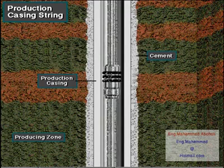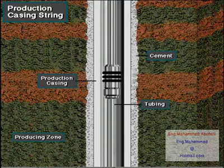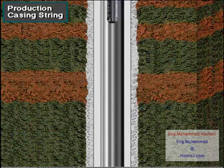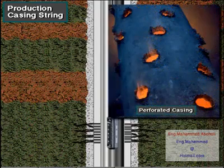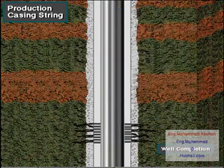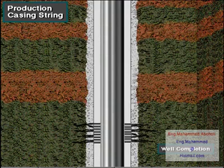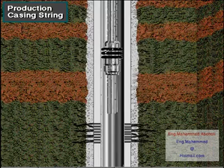Production casing also houses and protects the tubing and other equipment used to produce the well. The operator usually perforates — puts holes in — this casing when the well is completed or ready for work to begin. Well completion is the term describing the activities and methods of preparing the well for production; oil and gas flow into the well through the perforations.